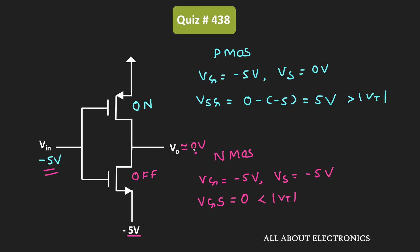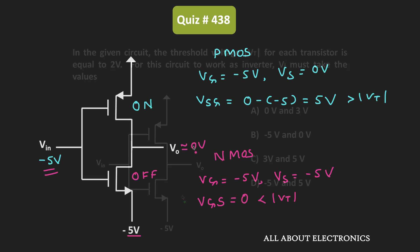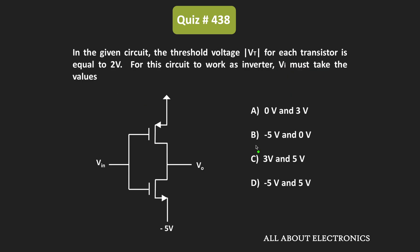In this way, this circuit is acting as an inverter. For the given circuit to work as an inverter, the input voltage should be equal to minus 5V and 0V. Therefore, for the given question, option B is the correct answer.